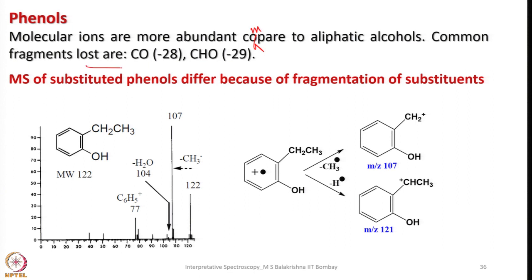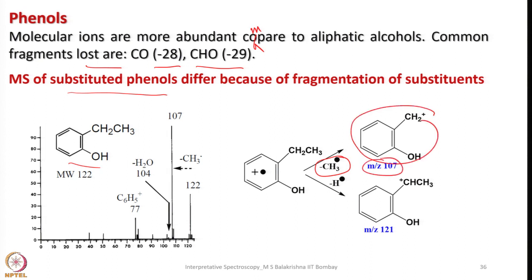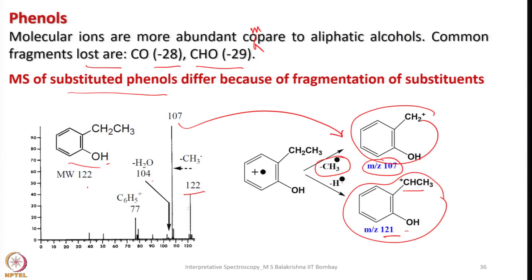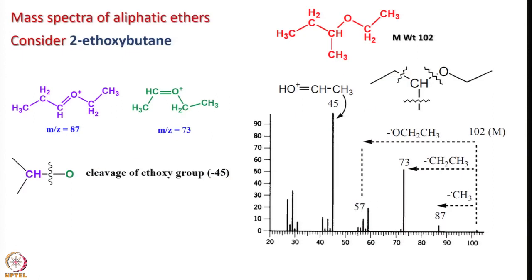Now let us look into phenols. Molecular ions are more abundant compared to aliphatic alcohols. Common fragments lost are CO (minus 28) and CHO (minus 29). Mass spectra of substituted phenols differ because of fragmentation of substituents: a CH3 radical can come out giving m/z 107, or a hydrogen radical can be lost forming CH3OH to give m/z 121. A typical example with molecular weight 122 shows 107, 121, and 77 (phenyl cation) as key fragments.